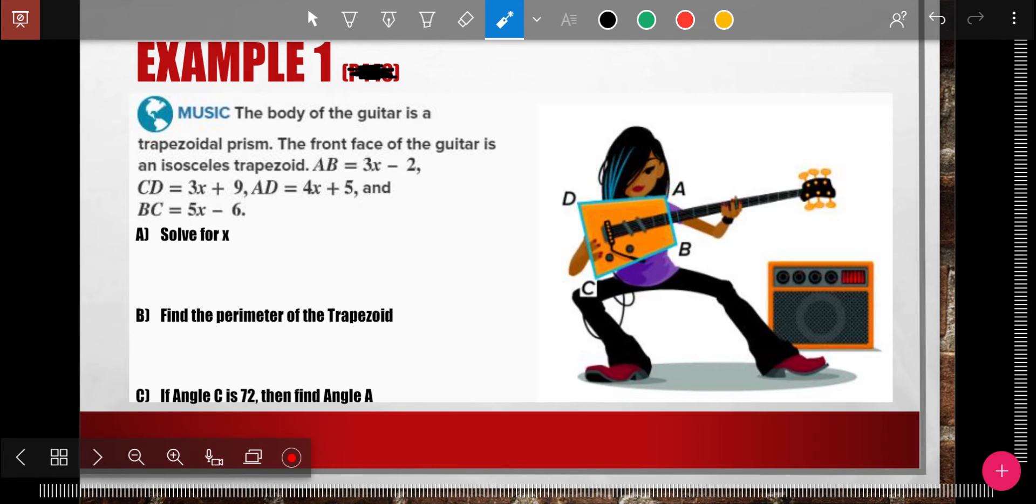And so let's look at example one here. It says the body of the guitar is a trapezoidal prism. So you see a trapezoid right here. The front face, that's the front, is an isosceles trapezoid, and it gives me all these things for A, B, C, D, AD, and BC.